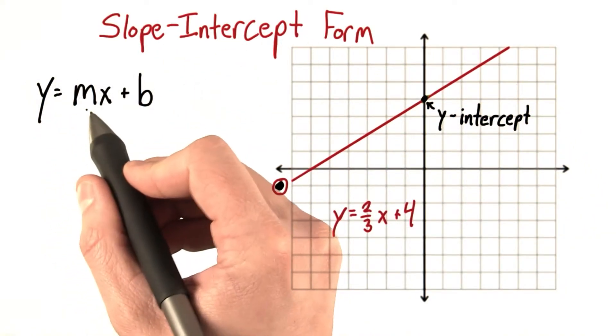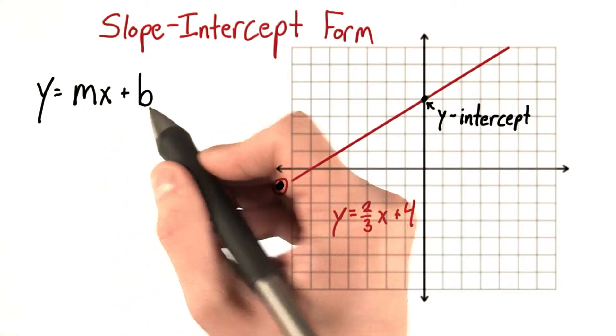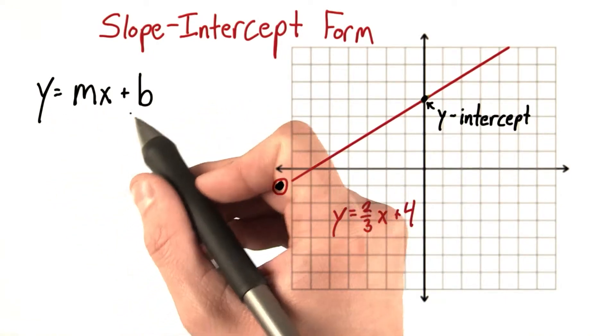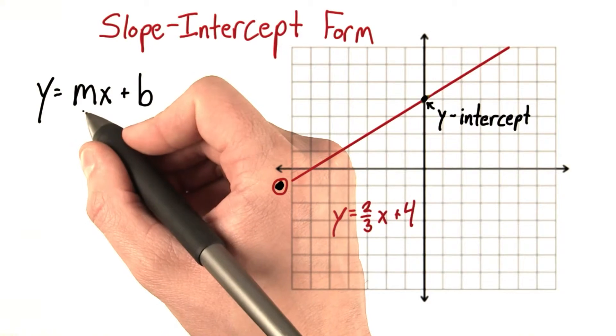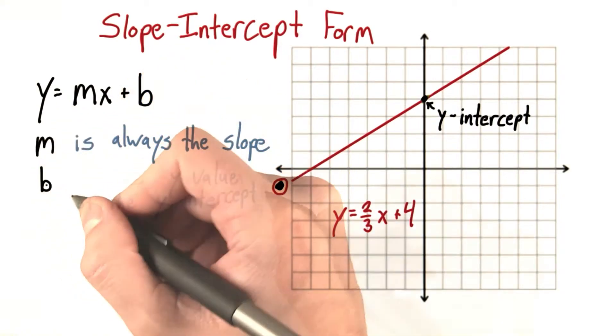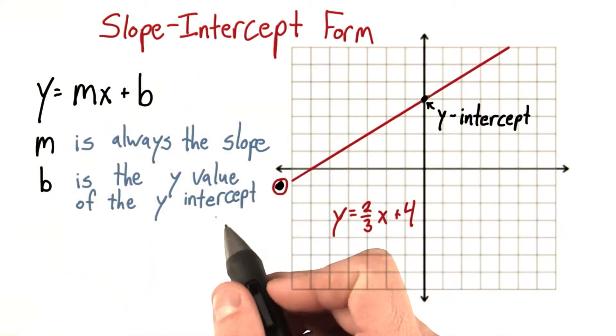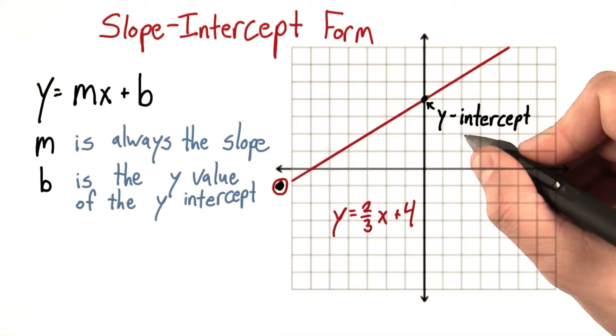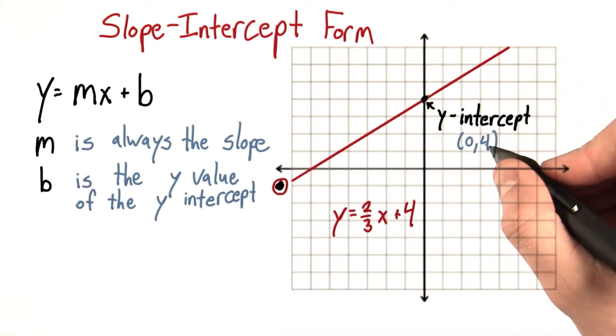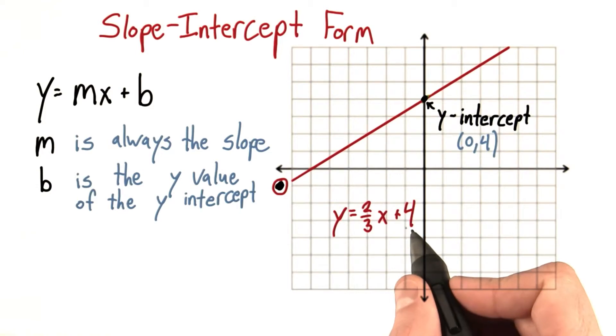which is y equals m times x plus b. And when an equation is written in slope-intercept form, m is always the slope, and b is the y-value of the y-intercept. So here the y-intercept was (0, 4), and so the y-value is 4. And we see that in the equation here.